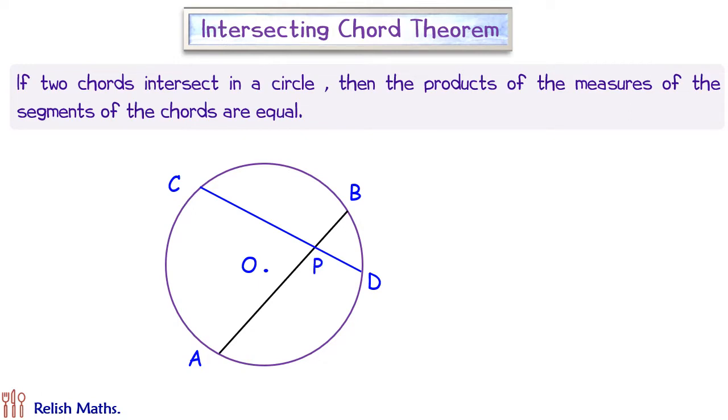As per the intersecting chord theorem, the product of PA into PB, that's the length of PA into PB, will always be equal to the length PC into PD. Irrespective of how small or big the chord is, if two chords are cutting each other, they will always maintain this relation: PA × PB = PC × PD.